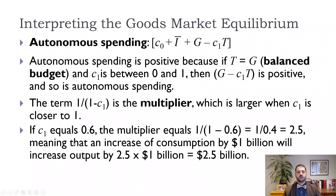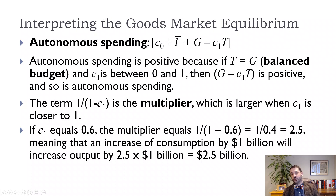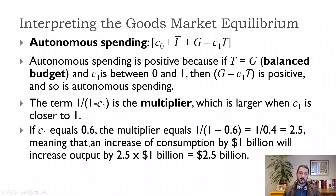For example, if C1 equals 0.6, the multiplier is 1 over (1 minus 0.6), or 1 divided by 0.4, which is 2.5. If C1 were 0.5, the multiplier would be 2. If C1 were 0.9, the multiplier would be 10.